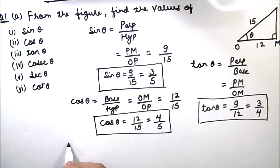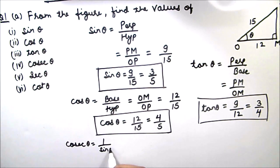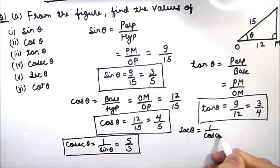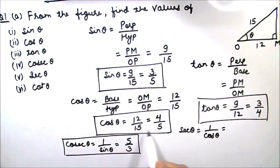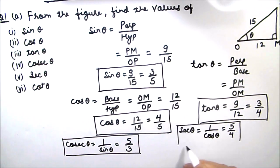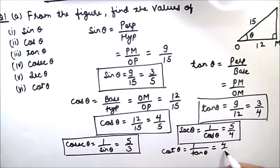For finding cosec theta we can take the reciprocal of sin theta. Cosec theta is 1 by sin theta, so this will be 5 by 3. Sec theta is the reciprocal of cos theta, so sec theta is 1 by cos theta. Taking the reciprocal of 4 by 5 gives us 5 by 4 — this is sec theta. And cot theta is the reciprocal of tan theta, so cot theta equals 1 by tan theta. Taking the reciprocal of 3 by 4 gives us 4 by 3.